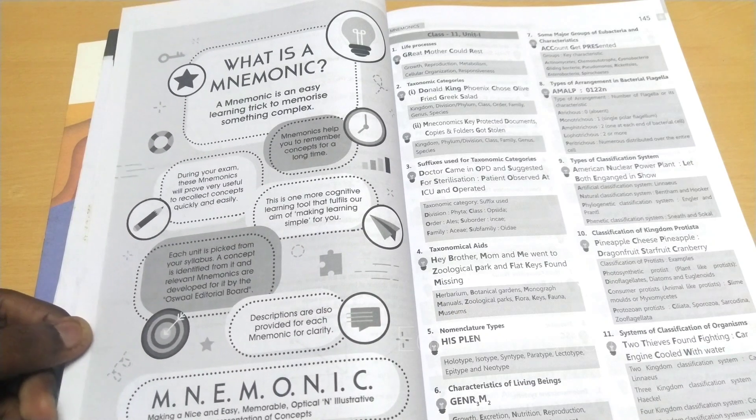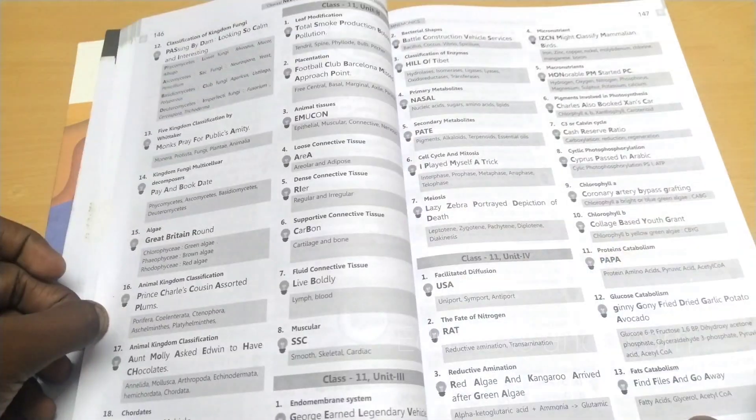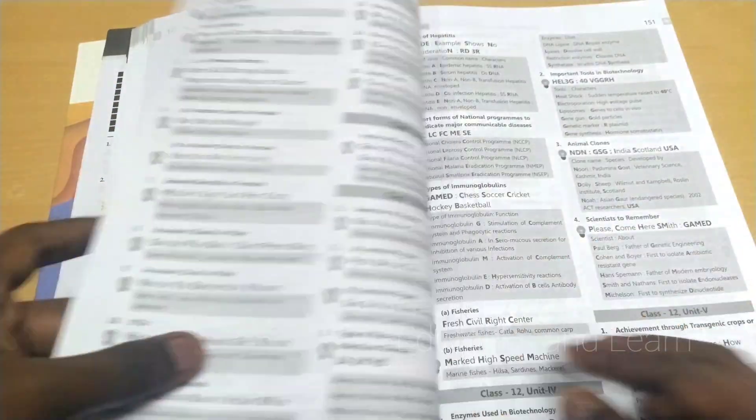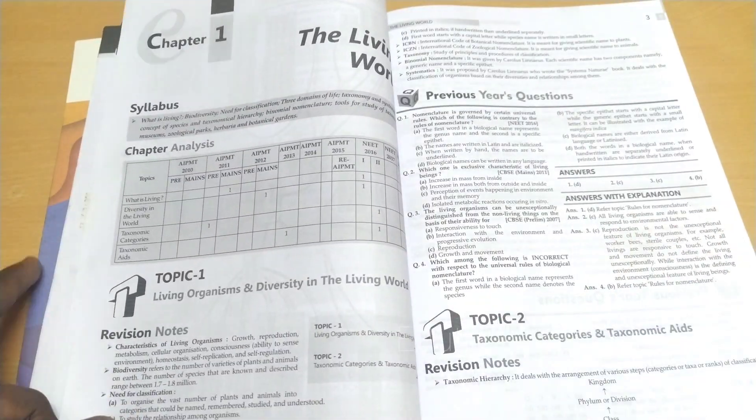Here they've given a word, and in that word you can memorize your whole concept. After that, with the starting of mind map, they've given Chapter 1.